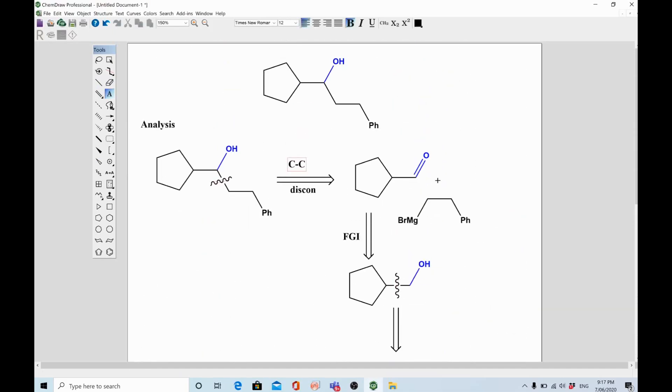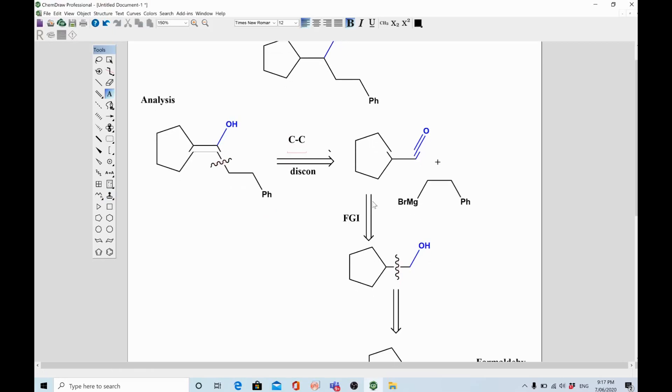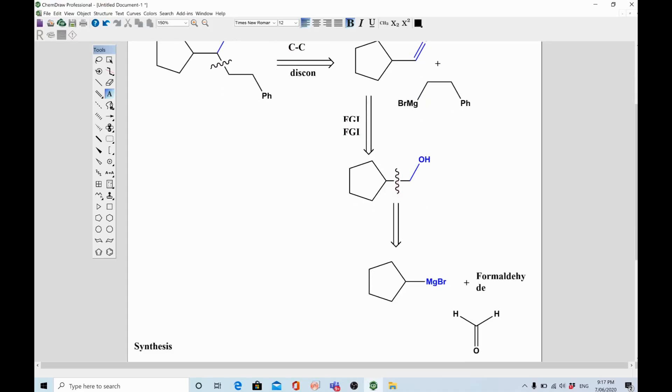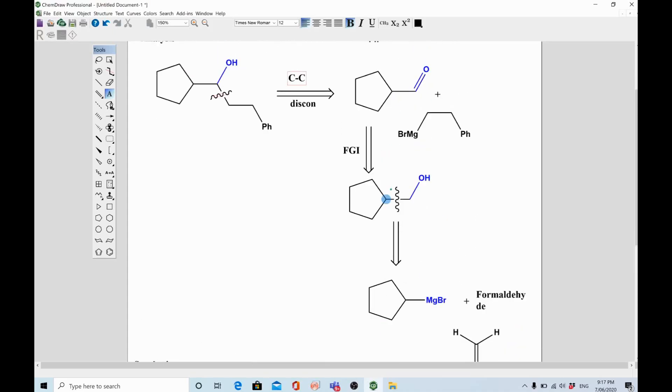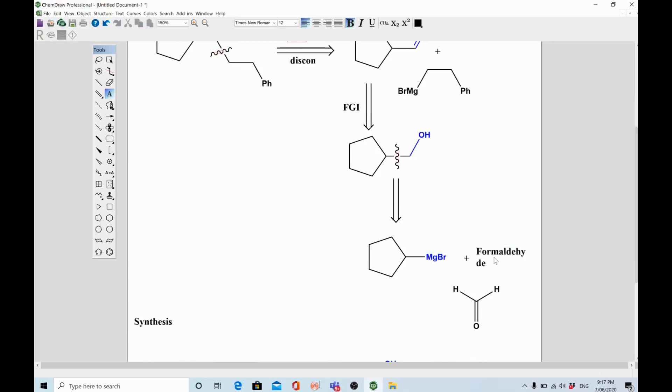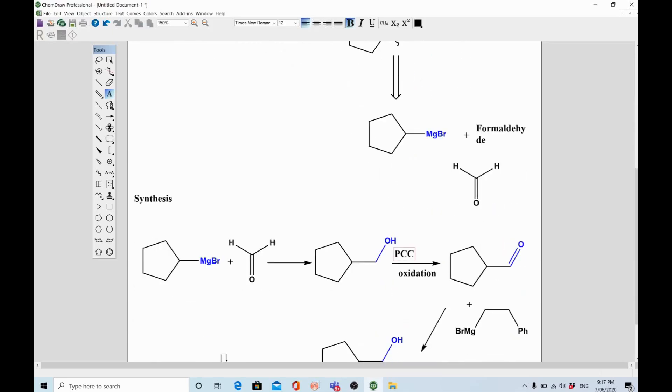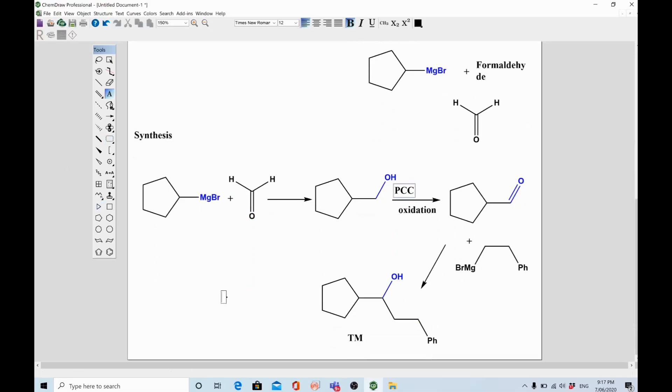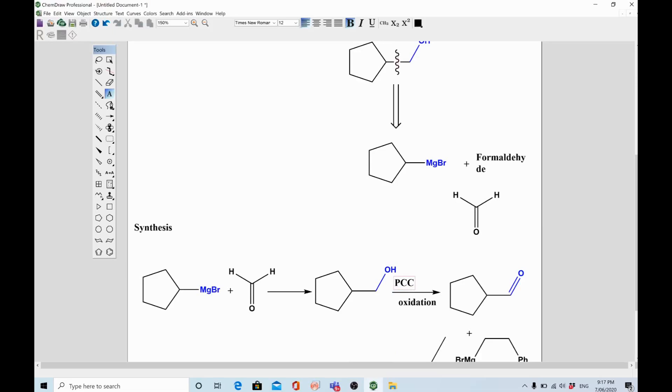We disconnected alcohol from this area, broken into two parts: aldehyde and Grignard reagent. Then we converted aldehyde by using FGI into alcohol. Then we converted alcohol again using same strategy as the first step into Grignard reagent and aldehyde, which is simplest formaldehyde. In synthesis, combine these reagents to make the products. And this is the forward direction, and this was the backward direction. I hope you like this video. Please press the bell icon for more interesting videos. Thank you.